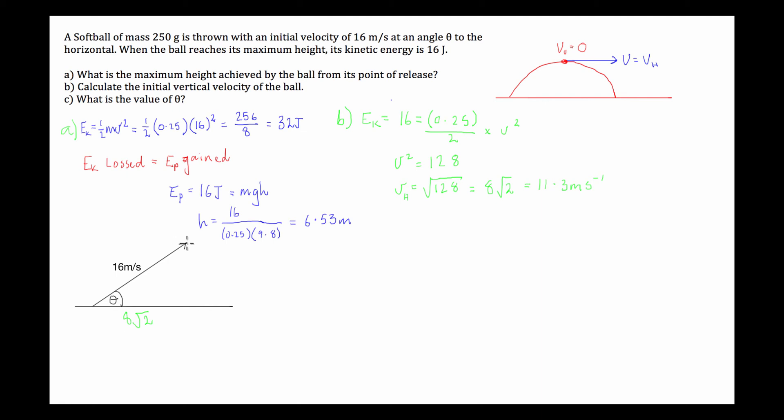Now, what we can do is, using Pythagoras, we can just find this component. So, we know that c squared is equal to a squared plus b squared. So, we can use b squared is equal to c squared minus a squared. So, in this case,